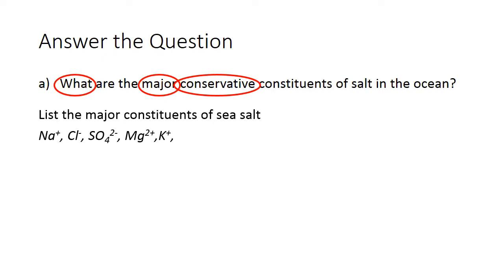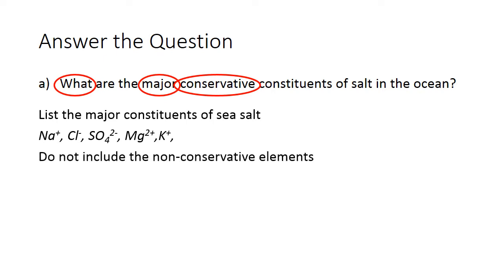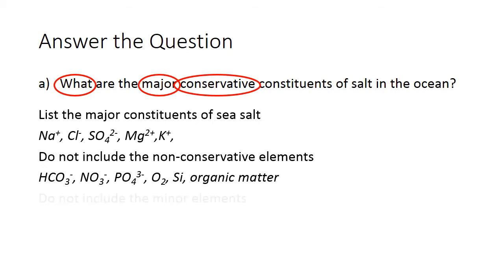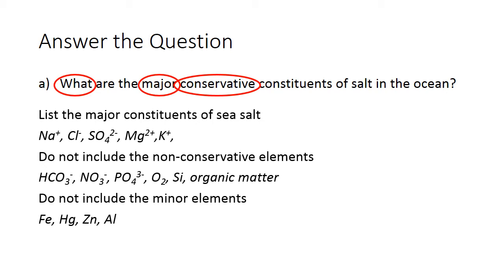Just writing down this list — sodium, chlorine, sulfate, magnesium, and potassium — would get you marks. What would not get you marks is writing down non-conservative elements like carbonate, nitrate, nutrients, oxygen, or silicon. These are dissolved in seawater but don't comprise the conservative components. Similarly, you shouldn't write down minor components just because the question specifically asks for the majors — things like iron, mercury, zinc, and aluminium are dissolved in seawater but are neither major nor conservative.